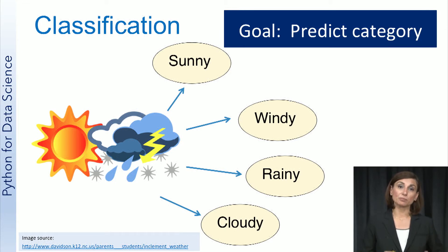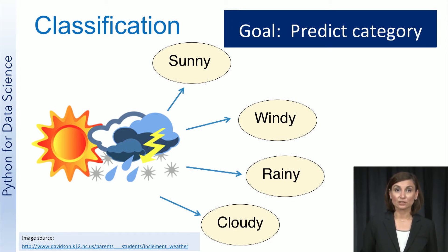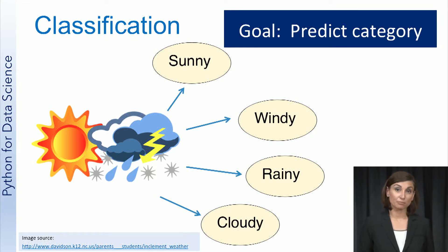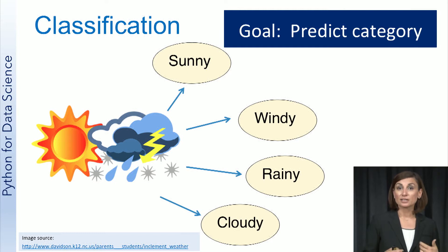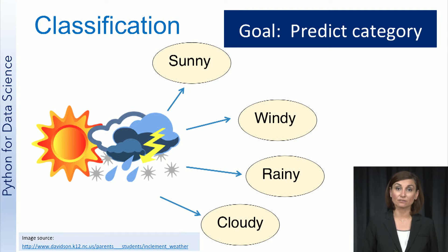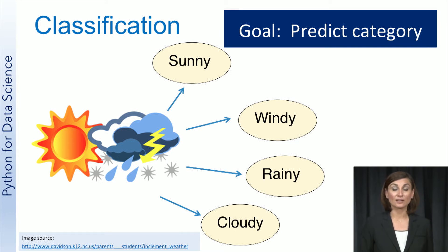The categories to be predicted are called classifications. Another example is to classify a tumor as benign or malignant. In this case, the classification is referred to as binary classification, since there are only two categories. But you can have many categories as well, as the weather prediction problem shown here. Another example of classification is to identify handwritten digits as being one of 10 categories, 0 to 9.